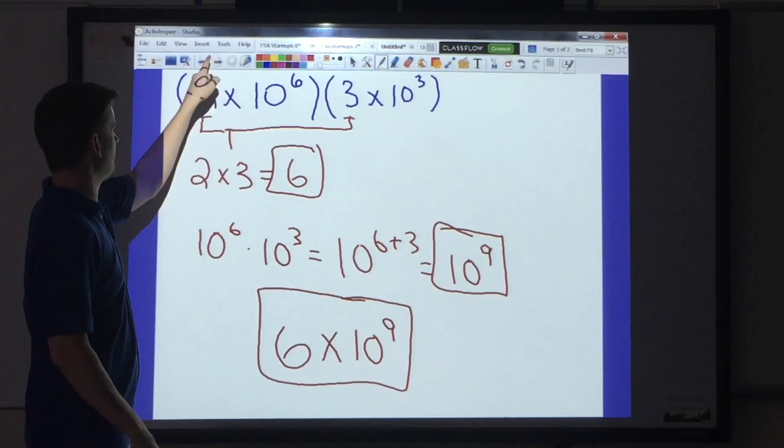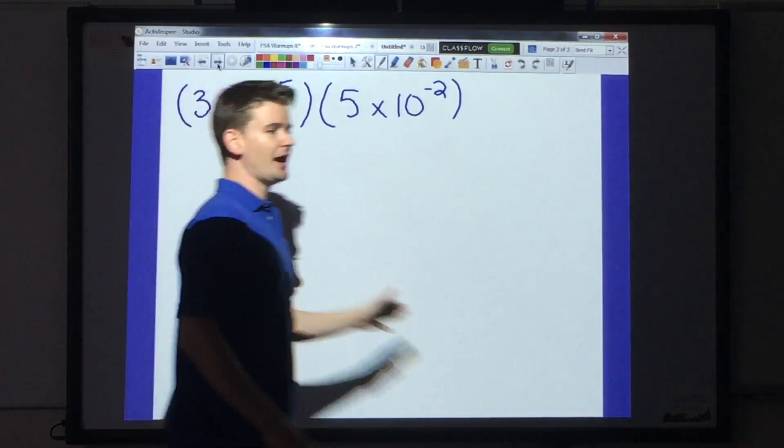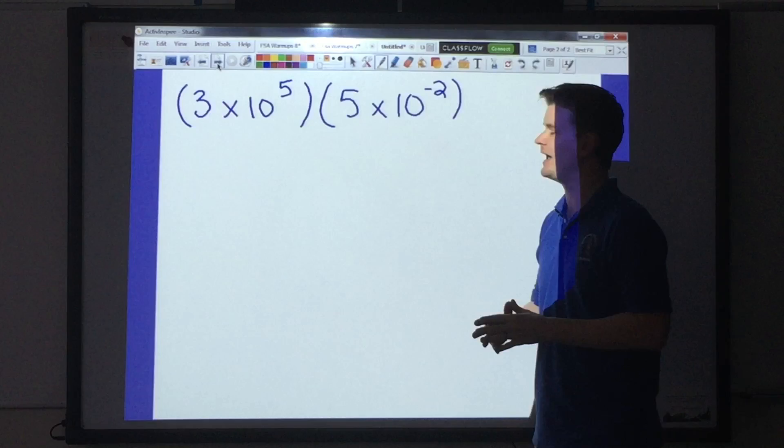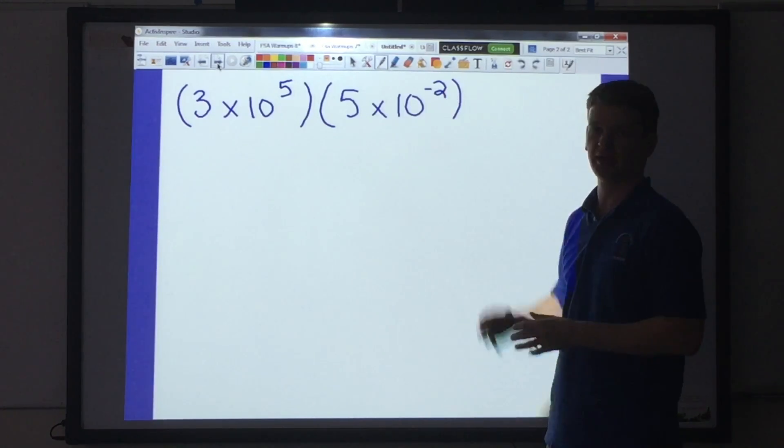We're going to try one more problem before I let you go. So here we've got 3 times 10 to the 5th, 5 times 10. We've got a negative exponent now, negative 2.